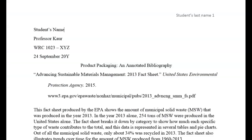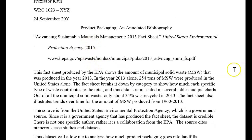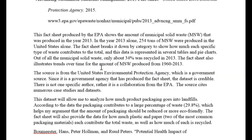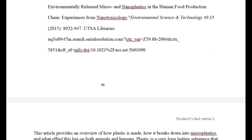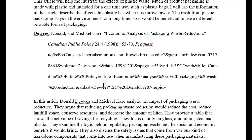Now let us take a quick look at a sample annotated bibliography. Notice that everything in this sample is formatted in MLA style. You have a running header with your last name and page number in the top right corner, the title block with your name, your professor's name, course title and date in the top left corner, followed by the citations and the three annotation paragraphs. Notice that the citations are double-spaced, but the annotation paragraphs are single-spaced. List your sources in alphabetic order.